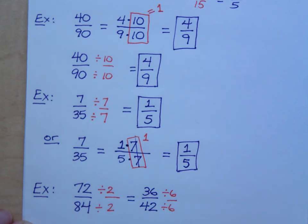So I can divide both the numerator and the denominator by six. So six divided by six is one, so that's what I'm doing. I'm dividing by one, or a form of one. So 36 divided by six is 6, and 42 divided by six is 7.